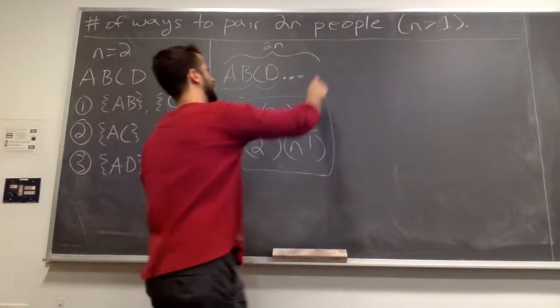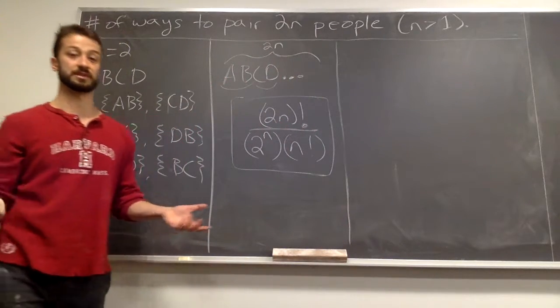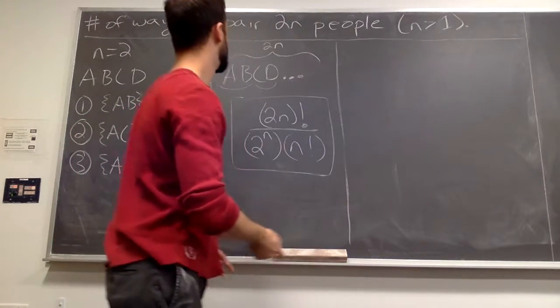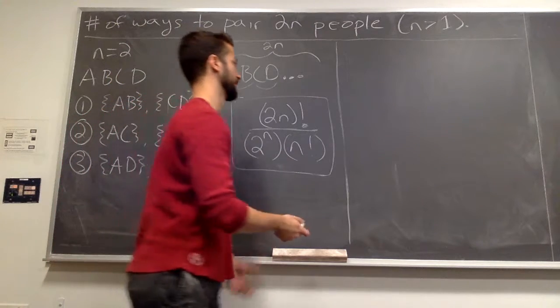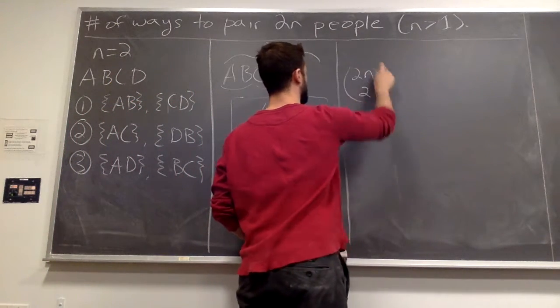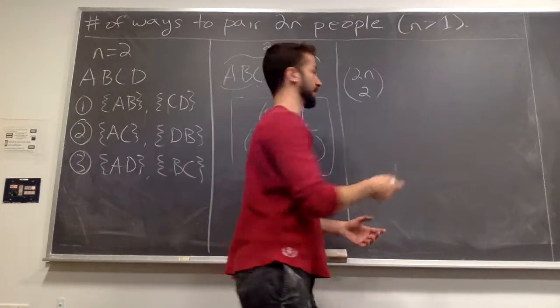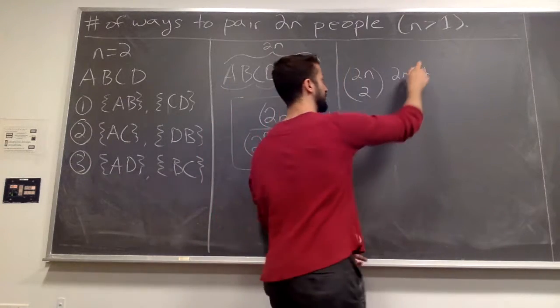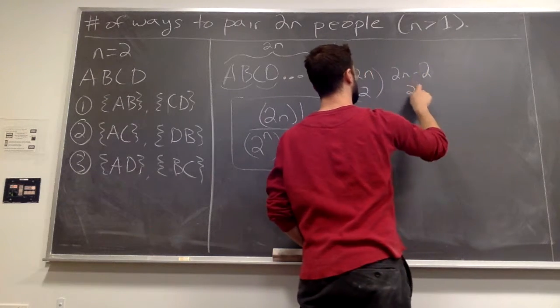An alternative solution that gets you the same result. It's always good to think of alternative solutions because some people sort of just understand different solutions better. You can think of choosing the pairs one by one. What do I mean by that? Well, okay. So you have 2N people. You want to choose your first pair. So you have 2N choose 2 choices for your first pair. You chose that pair. Now you want to choose a second pair. You have 2N minus 2 people left because you took two people out for a pair. 2N minus 2, choose 2.